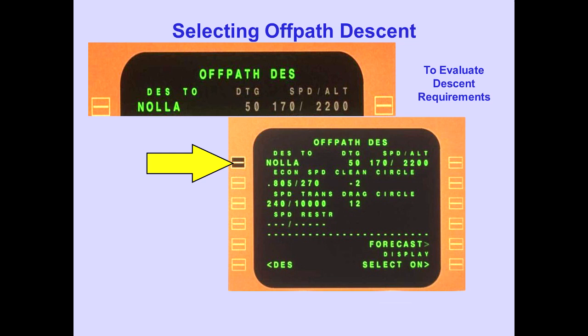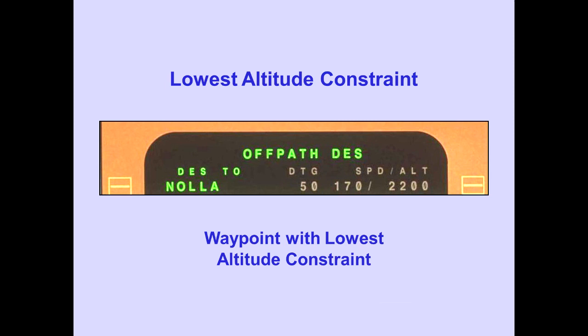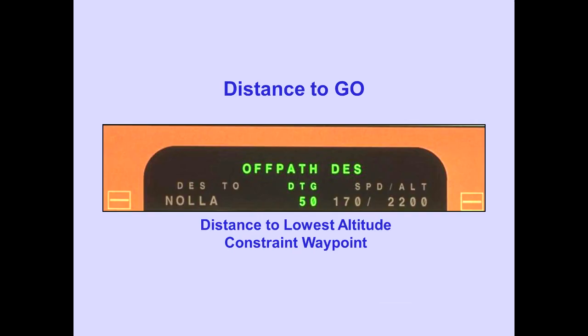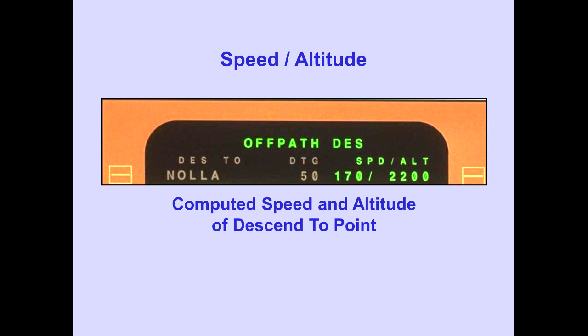Line selecting off-path descent displays the off-path descent page, which provides the means for the flight crew to evaluate the descent requirements to proceed from present position direct to the descent-to point and obtain the associated altitude. The descent-to line displays the waypoint with the lowest altitude constraint and can be changed by the flight crew. The distance-to-go line displays the distance from the airplane to the lowest altitude constraint waypoint. The speed-altitude line displays the computed speed and altitude at the descent-to point, and these values can be changed by the flight crew.